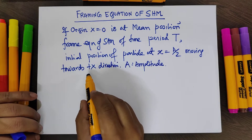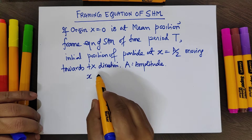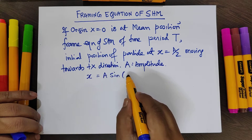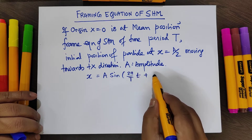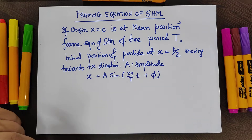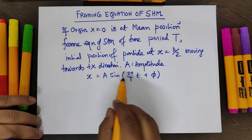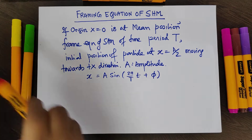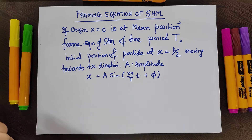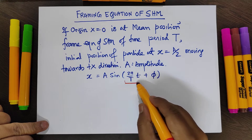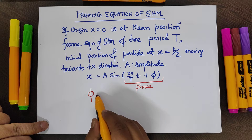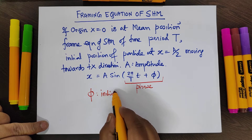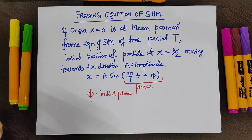The equation will be of the form x = A sin(ωt + φ), where ω = 2π/T. Now, this φ is the initial phase. This whole quantity (ωt + φ) is known as the phase, and φ is the initial phase. This φ depends on the starting position and starting condition of the particle.